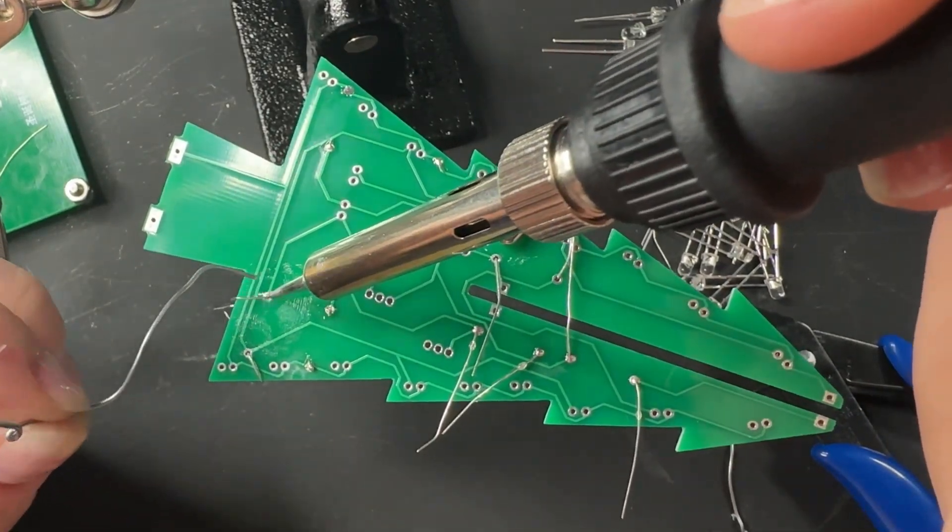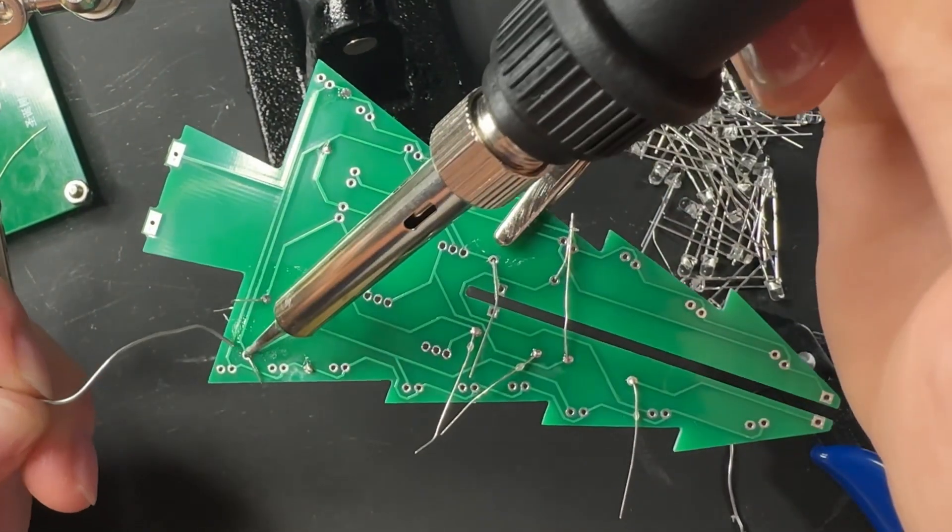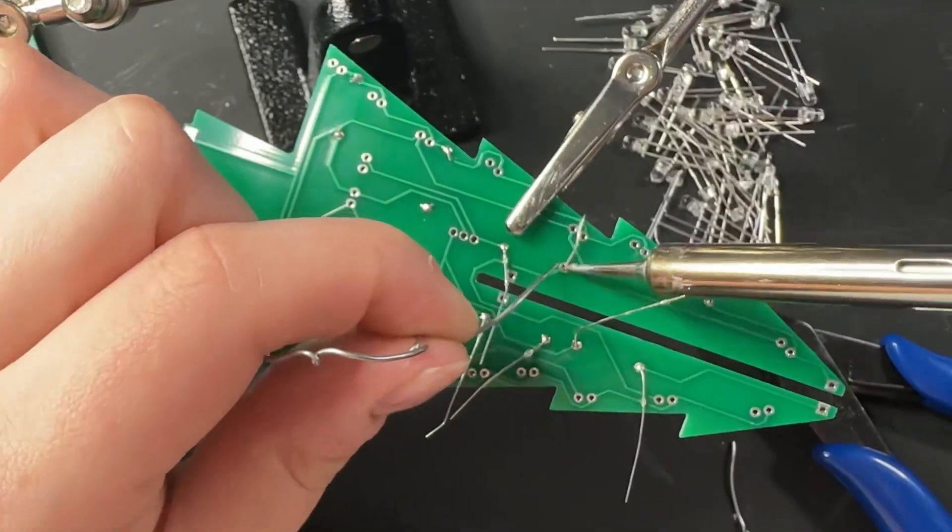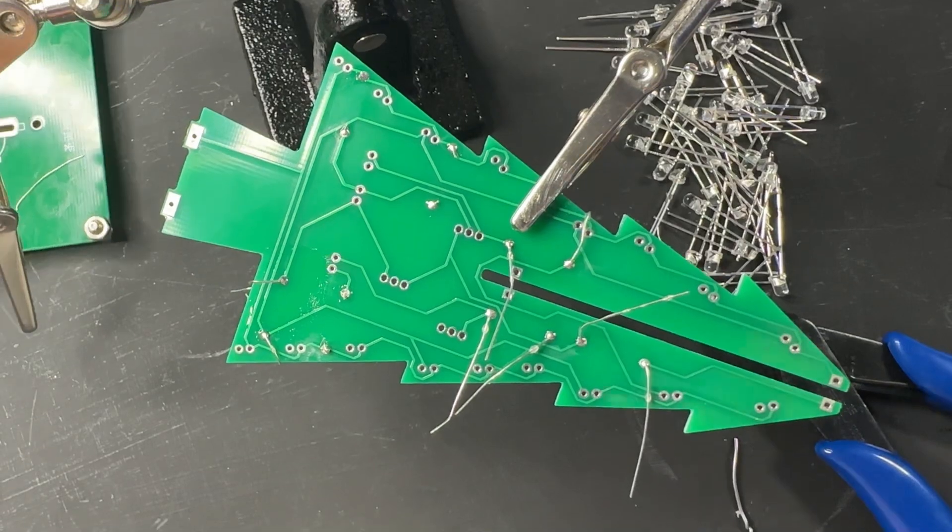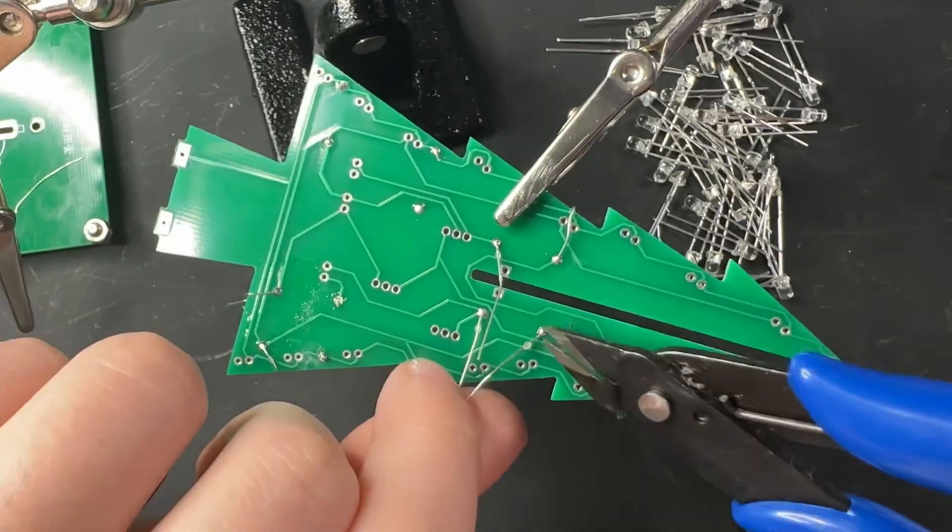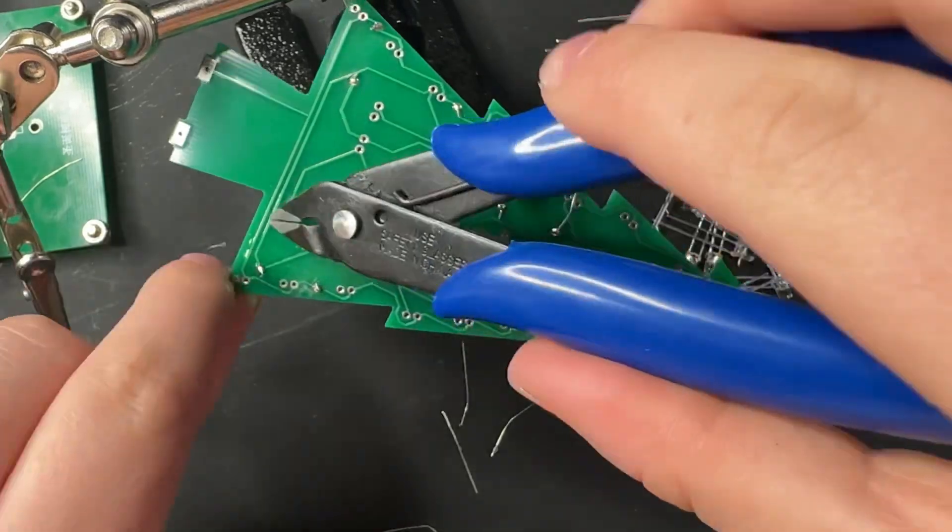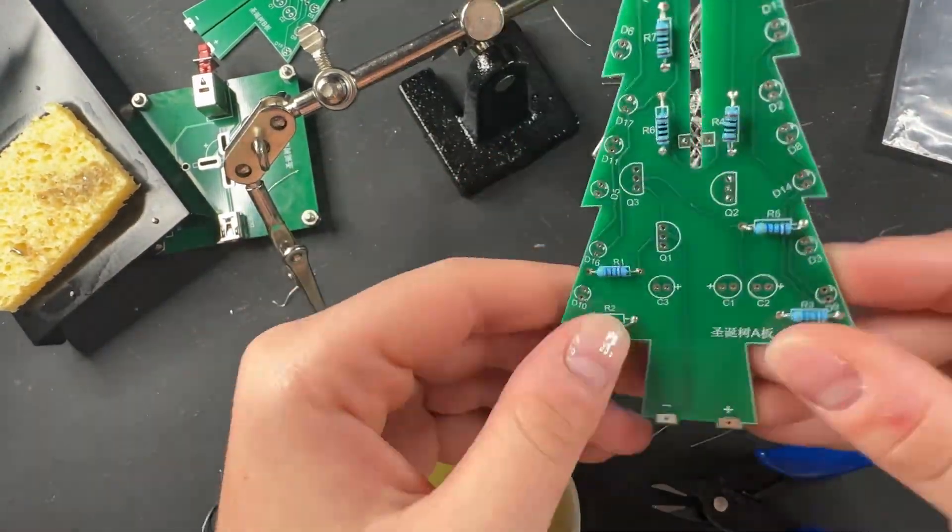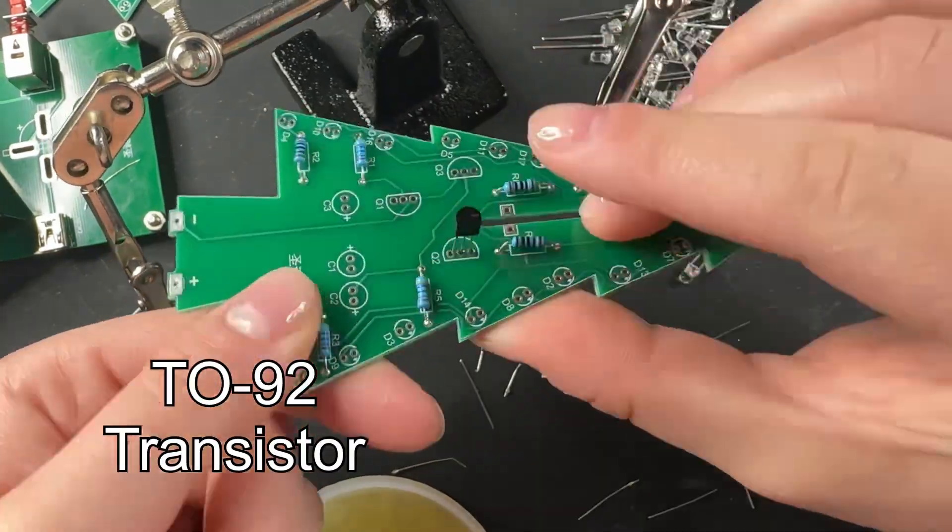But here we go, I am soldering on the rest of the resistors. Something I really like to use is the flux or soldering paste. It just is really helpful because if you put it on your joints, it gives me a better idea of how long I want to heat up my joint with my soldering pen before I want to touch my solder to it because it will melt away.